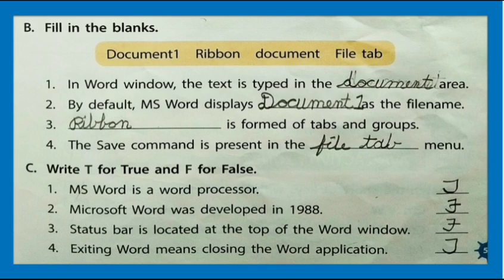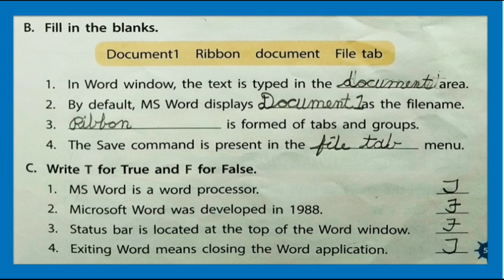Fill in the blanks. Text is typed in the Document Area. By default, MS Word displays Document 1 as a file name. Ribbon is formed of tabs and groups. The Save command is present in the File Tab menu. Now True or False: MS Word is a word processor — True. Microsoft Word was developed in 1988 — False. Status bar is located at the top of the Word window — False. Exiting Word means closing the Word application — True.